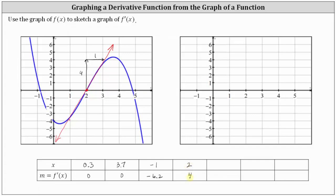Let's sketch one more tangent line at x equals 4.5, which would be this point here. Again, we go down far enough so we can go over exactly one unit to find a second point on the tangent line. If we go down five units and right one unit, we find another point. The vertical change is negative five and the horizontal change is positive one, so the slope of the tangent line is negative five at x equals 4.5. The derivative function value is approximately negative five.